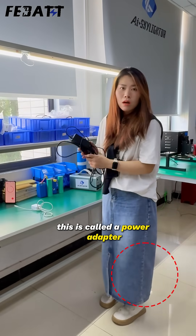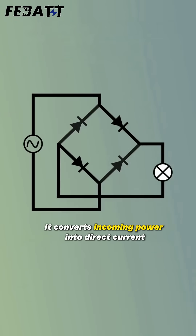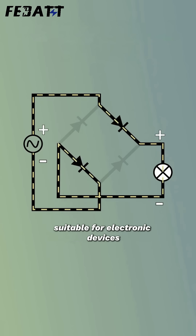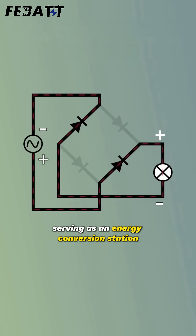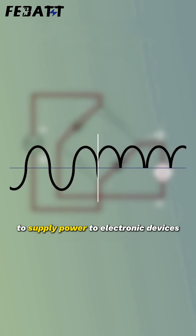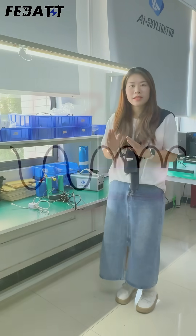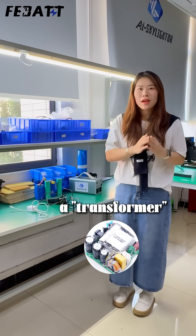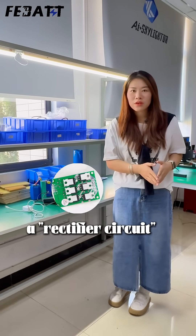This is called a power adapter. It converts incoming power into direct current suitable for electronic devices, serving as an energy conversion station to supply power to electronic devices. It consists of a casing, a transformer, and a rectifier circuit.